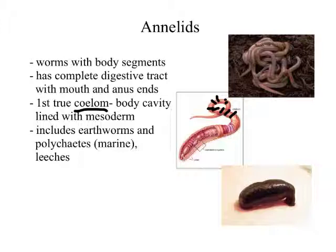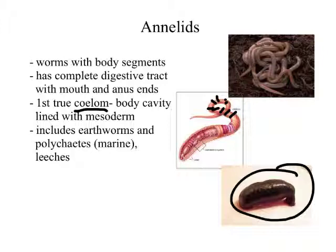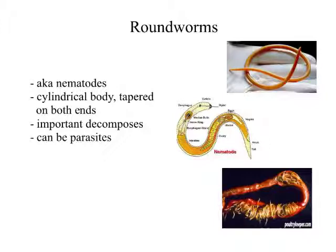Annelids include your standard earthworms — if you dig in wet soil in the morning you can find a bunch — and there are also marine types called polychaetes, and leeches. Leeches are annelids with a mouth that attaches to another organism and sucks blood from them.